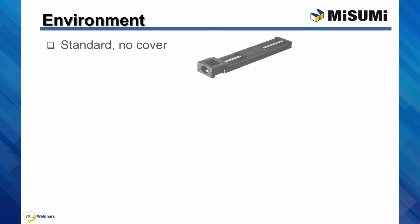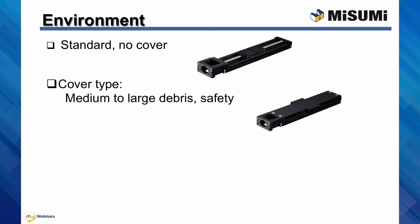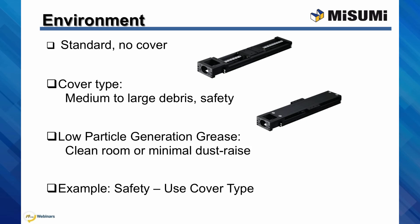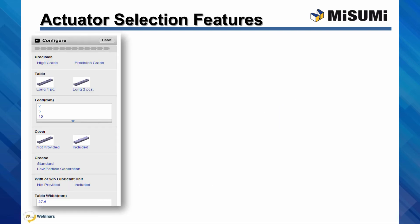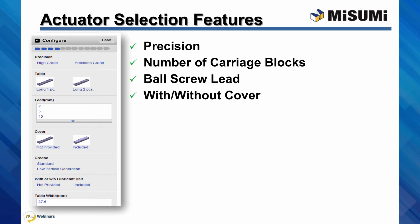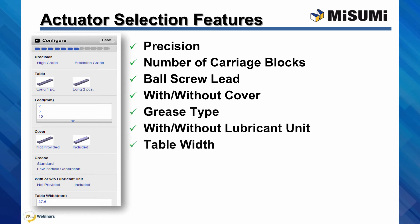The final application consideration for this example is the environment. The standard LX actuator has no cover, but there is a cover type available to protect against medium to large debris and for added safety, as well as a class 10 cleanroom-rated grease for environments requiring minimal dust. Because this example application was designed to operate the full demo unit on the show floor, the cover type is selected for safety concerns. As each option is selected in our online configurator, the part number will be narrowed down, helping to build your final part number for your application.